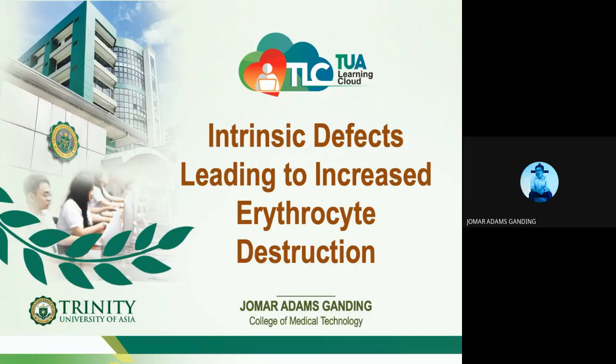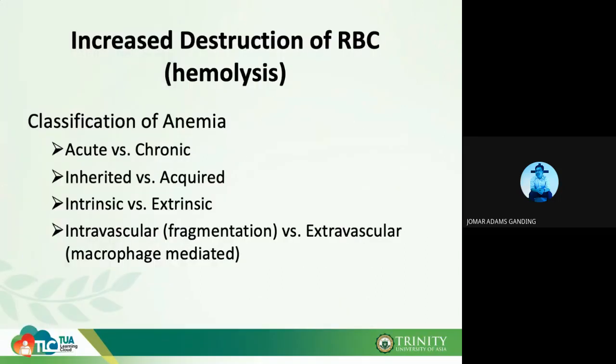To start, let's talk about hemolysis first. When we talk about increased destruction of your RBC, it can be in different forms: it can be acute or chronic, inherited or acquired, intrinsic or extrinsic, and even intravascular or extravascular hemolysis.